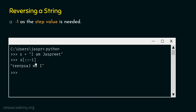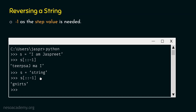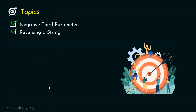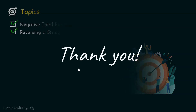Let's consider one more string: s equal to 'string'. Now if we type s[::-1] and hit enter, we get G N I R T S, which is the reverse of 'string'. So this is all we need to understand about reversing a string and negative third parameter. We have understood what is negative third parameter and how to reverse a string. Thank you for watching this presentation. I will see you in the next one.